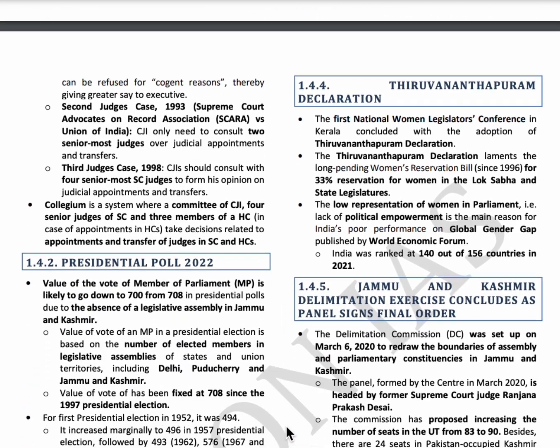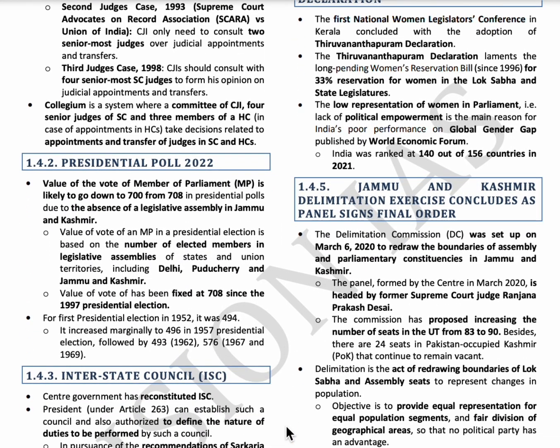The next topic is Presidential Poll 2022. The President is elected by an electoral college consisting of elected members of both houses of Parliament, legislative members of states, and the union territories of Delhi and Puducherry. Since Jammu and Kashmir became a union territory, the value of a vote of an MP has gone down from 708 to 700.